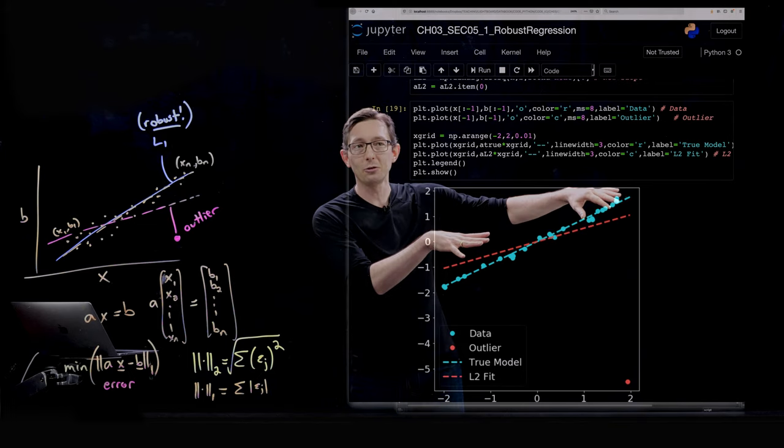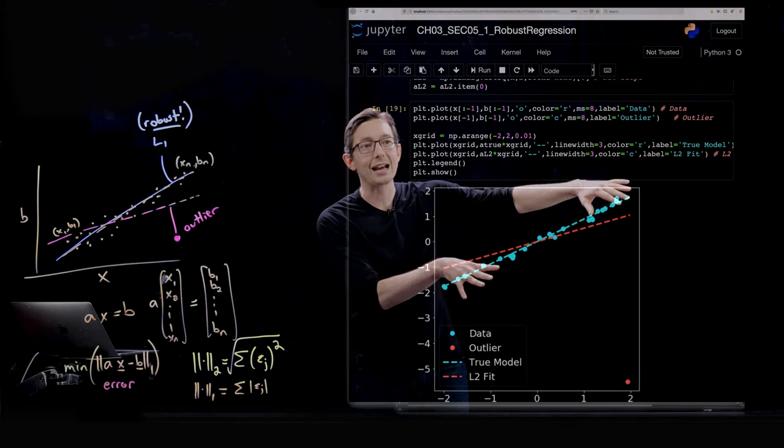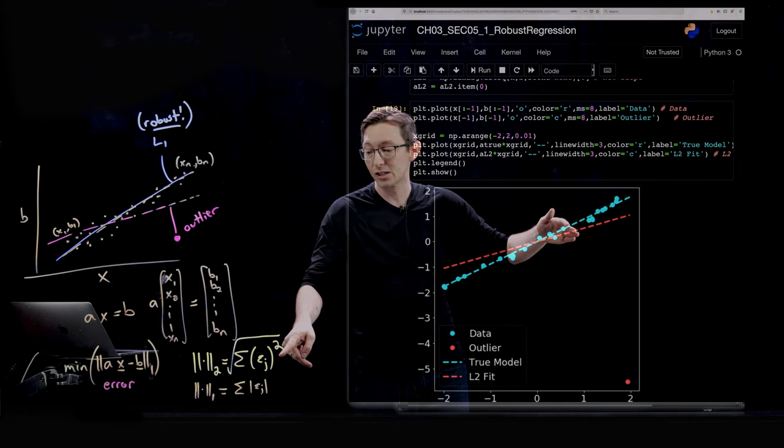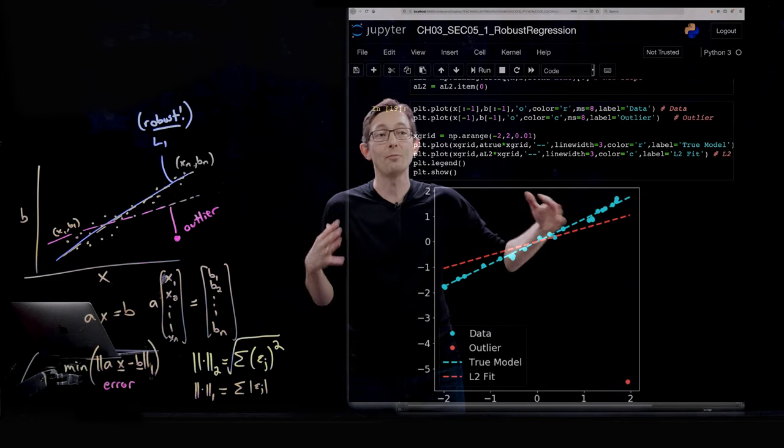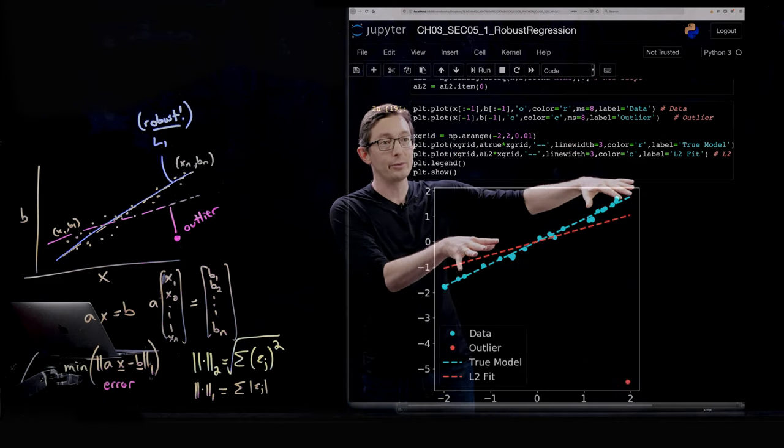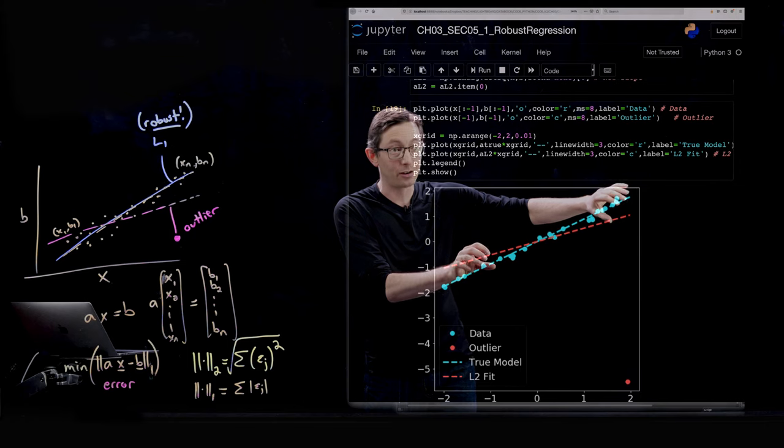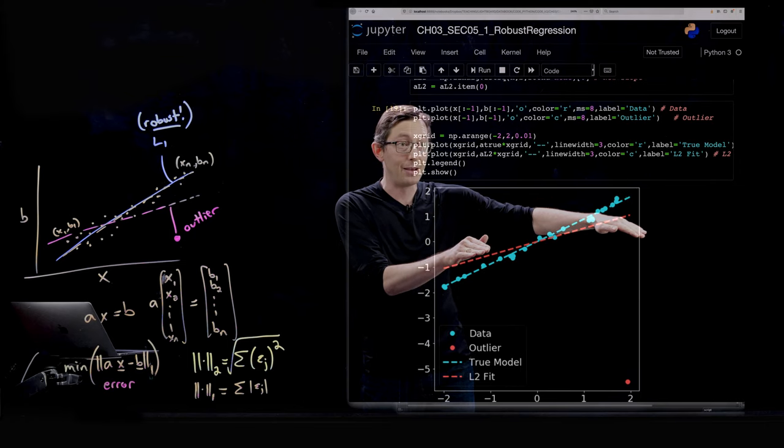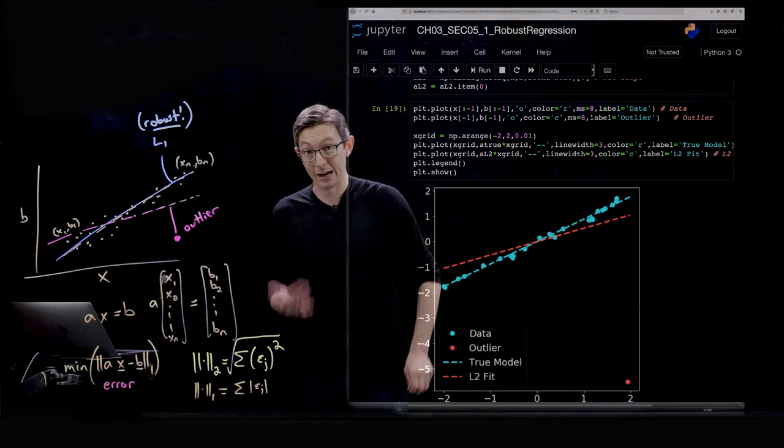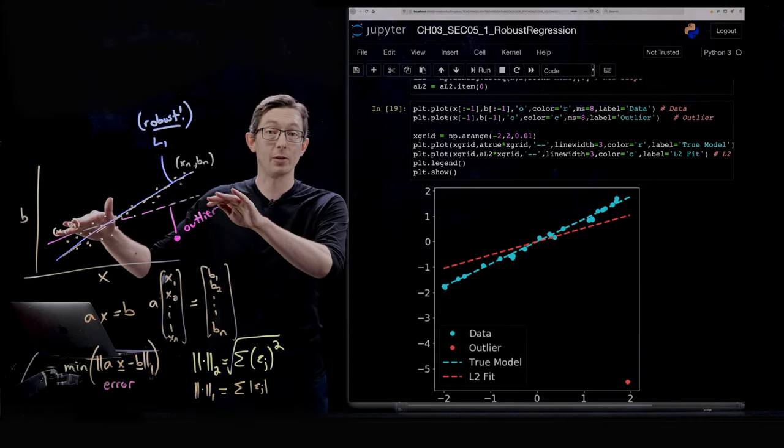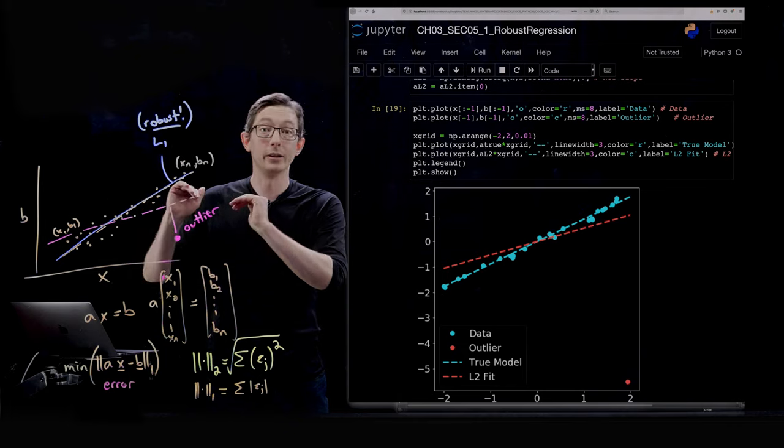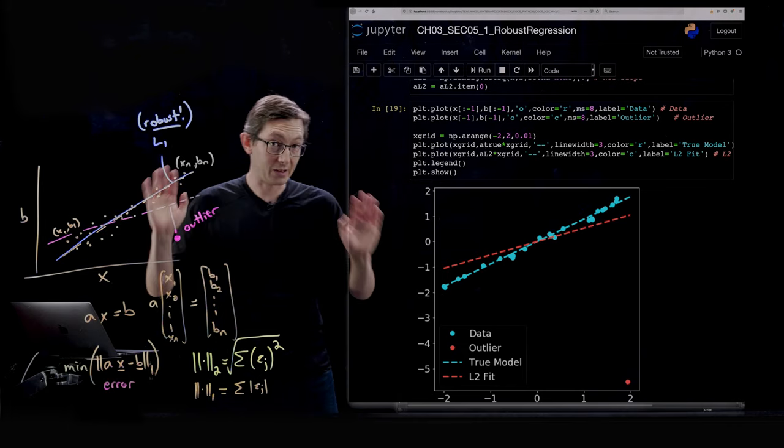But that single bad outlier will tilt my entire distribution down. Because remember, I'm trying to minimize the square error here. And the square error to this outlier is so massive that the whole distribution, it's willing to have this much error with every other data point to make it a little bit smaller error with that red outlier. And so a single outlier can ruin your least squares regression, absolutely ruin the least squares fit. It's a big problem.